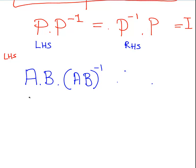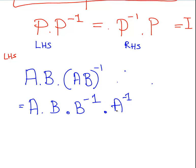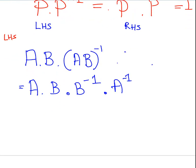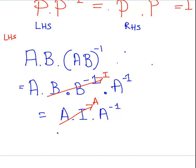We will only reach the identity matrix by both methods if the statement we are trying to prove is correct. According to the statement, AB times its proposed inverse equals A times B times B to the minus 1 times A to the minus 1. B times B to the minus 1 cancels out to the identity matrix, leaving A times the identity matrix times A to the minus 1, which cancels to A times A to the minus 1, and that equals the identity matrix. That is the left-hand side.